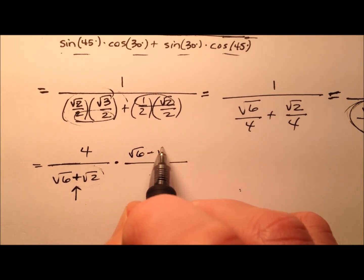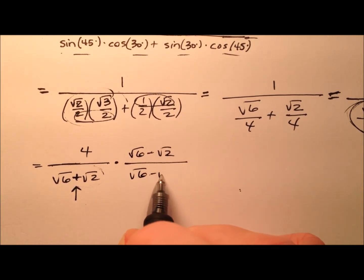We'll use the square root of 6 minus the square root of 2, and we'll get parentheses around everything here.